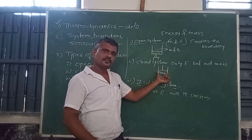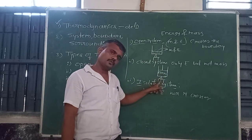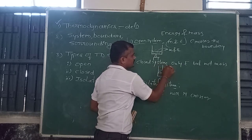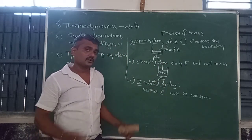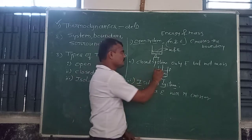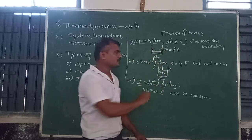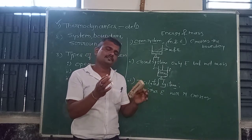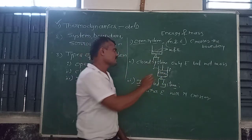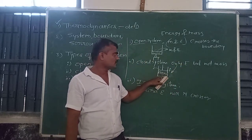In a closed system, consider gases enclosed in a cylinder. When heated from the bottom, the gases expand and the piston moves gradually upward. Because of this movement, work is performed — energy is crossing the boundary into the surroundings, increasing the temperature of the surrounding air. However, the gas itself is not crossing the boundary limit — only energy crosses, not the mass of the gas.